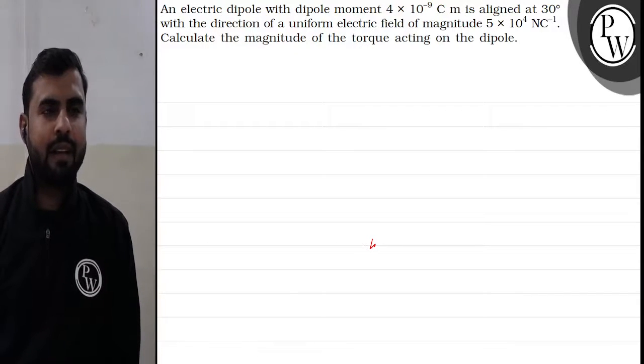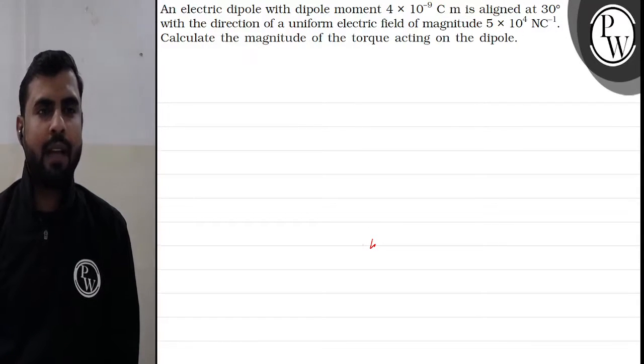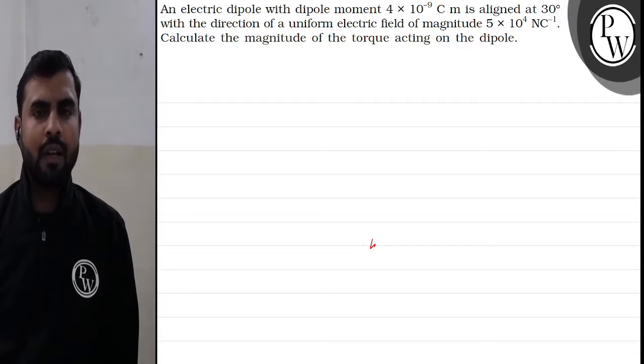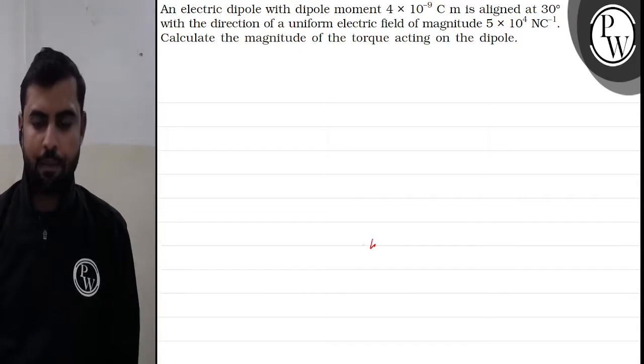Hello everyone, let us read this question. An electric dipole with dipole moment 4×10^-9 coulomb meter is aligned at 30 degrees with the direction of a uniform electric field of magnitude 5×10^4 newton per coulomb. Calculate the magnitude of the torque acting on the dipole.